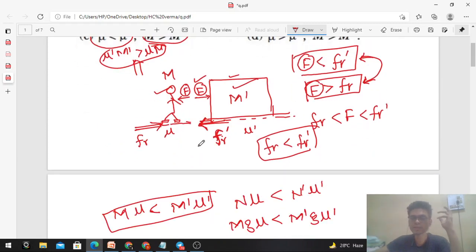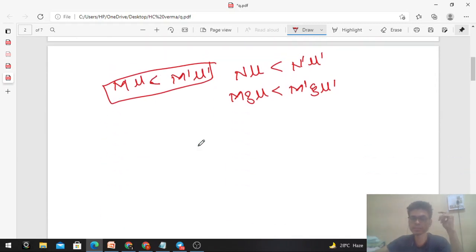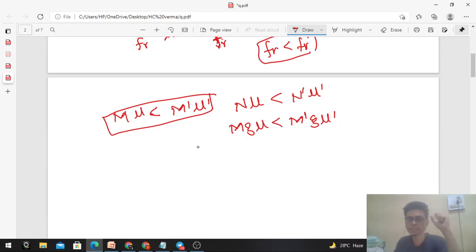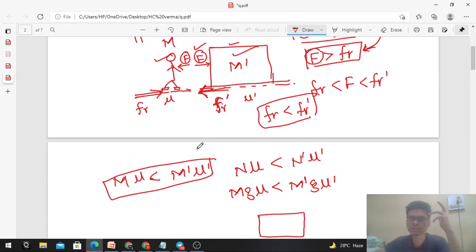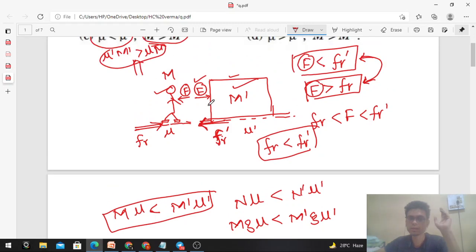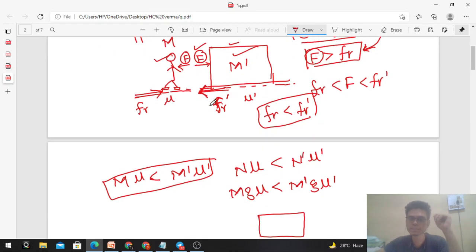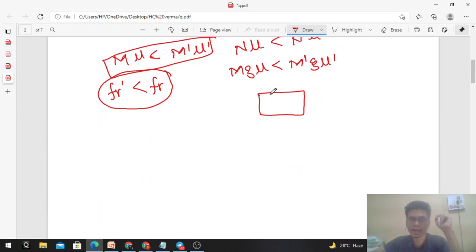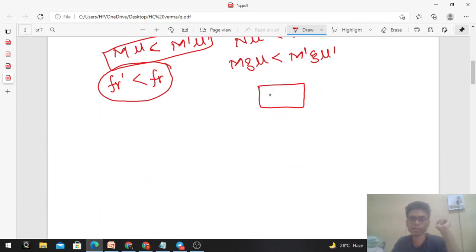Right. Now, if instead it asks: find the condition at which the box will start sliding. When will the box start sliding? Again, F_r' is less than F.